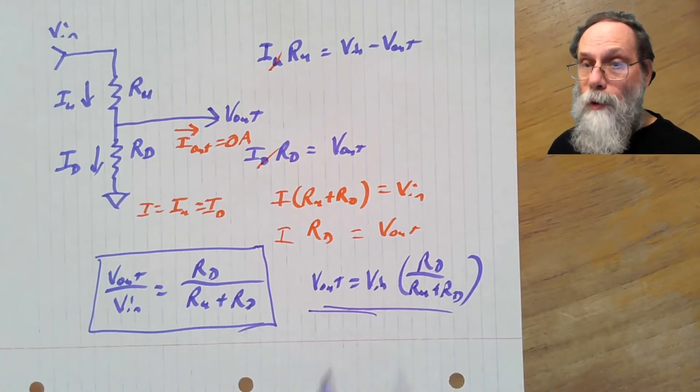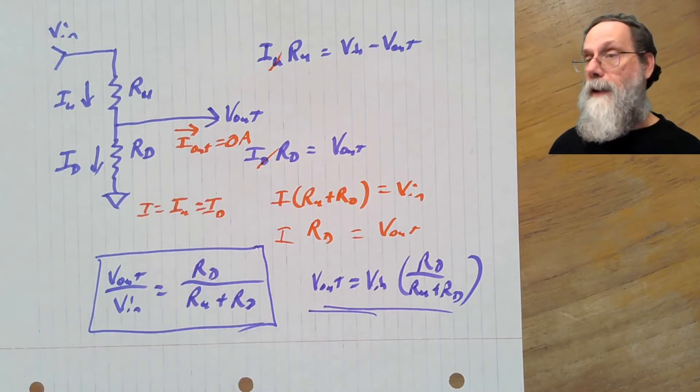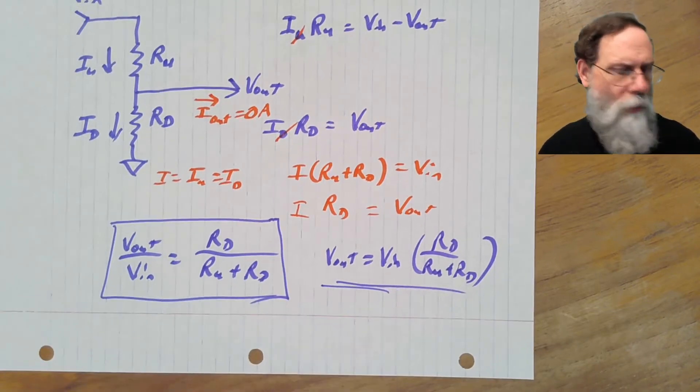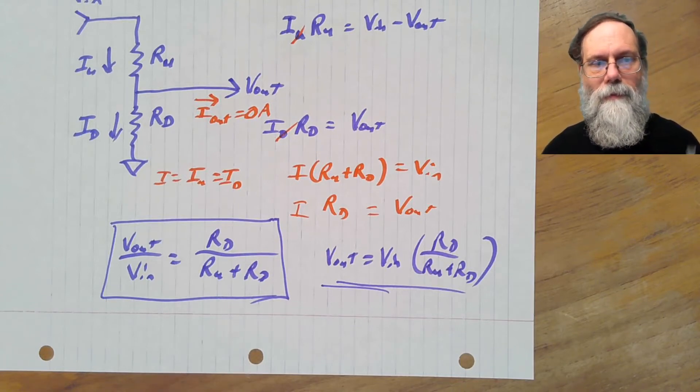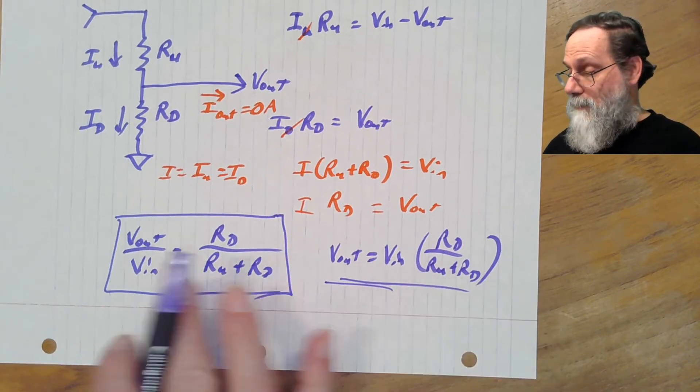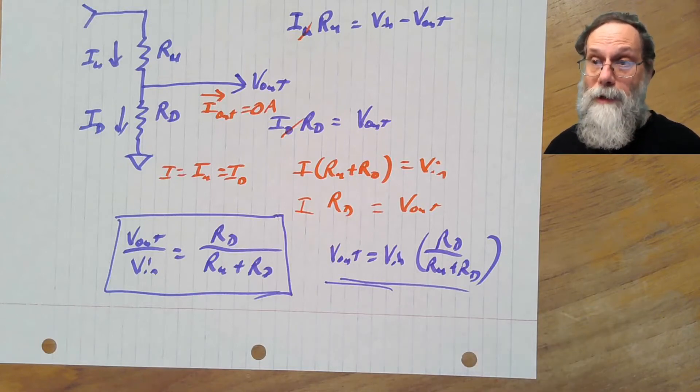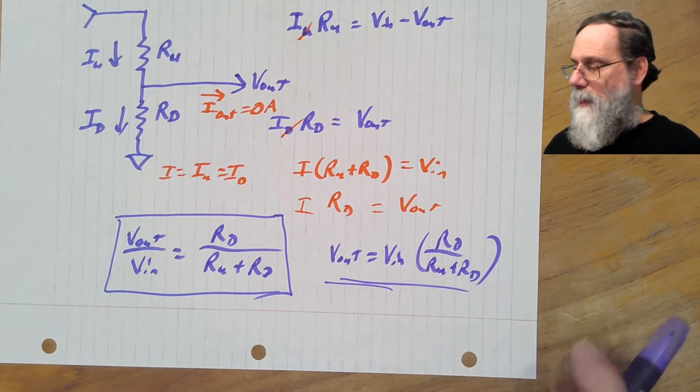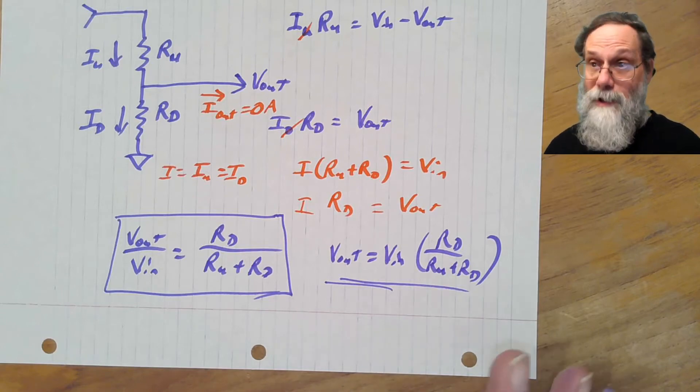Notice that this equation only works when we have this important constraint that we're taking no current out of the middle of the voltage divider. Let's work an example on this, just to get some concreteness. Incidentally, this formula, whichever way you want to memorize it, is one of the few formulas in this book that's worth memorizing because the voltage divider equation is one of the three fundamental concepts in the book. Voltage dividers, complex impedance, negative feedback amplifiers. This is the first of them.